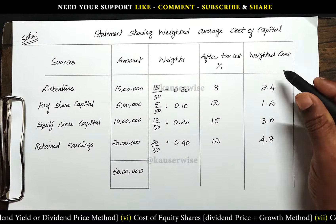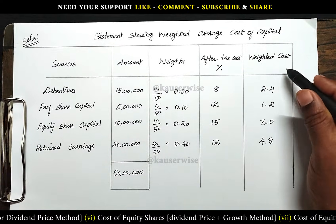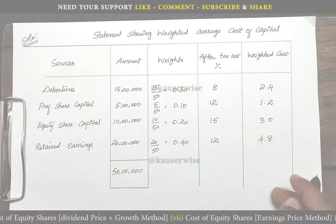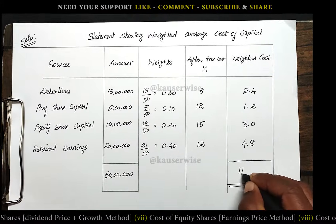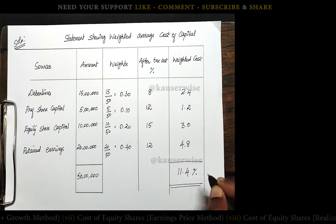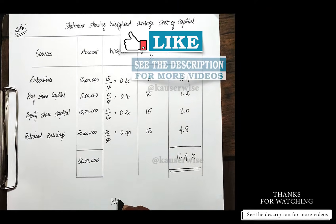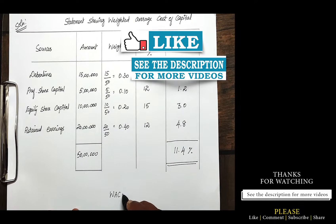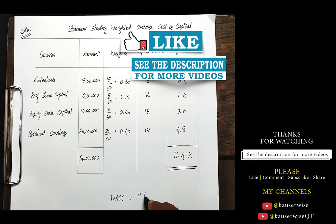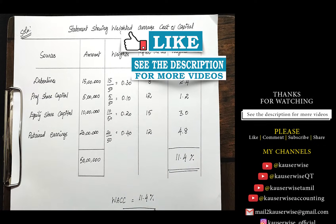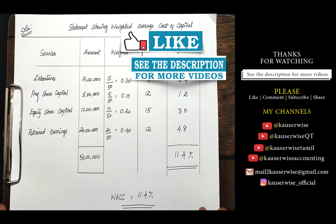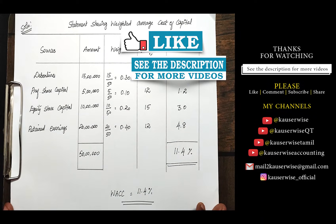This is the way to calculate the weighted cost of each and every component. Now get the total — you will be getting 11.4%. So this is the weighted average cost of capital, 11.4%. This is the way to calculate weighted average cost of capital.